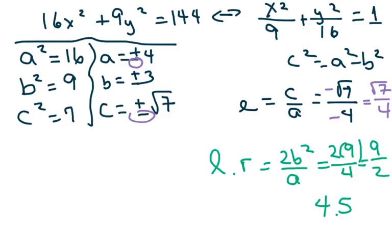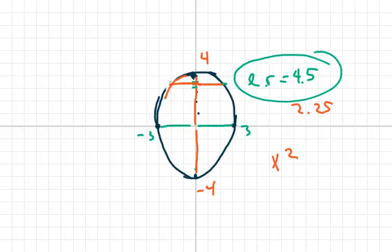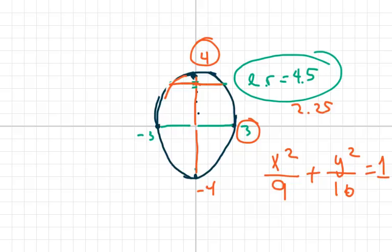I went ahead and kind of drew this. So this is your LR here. Basically, it's the cord. So basically, it's the cord that connects the focus to the outer. And that length is 4.5. So it's 2.25 on each side. And then if you have your, I can write from here, this would be x squared. Your x is your 3. So that's 3 squared is 9 plus y squared. And that's 4. 4 squared is 16 equals 1.